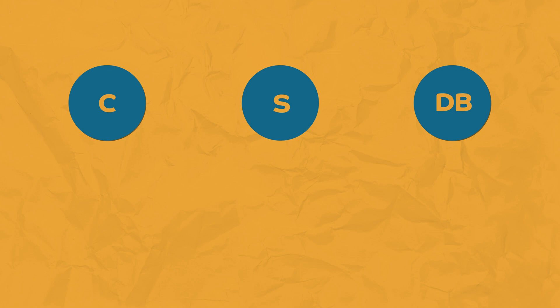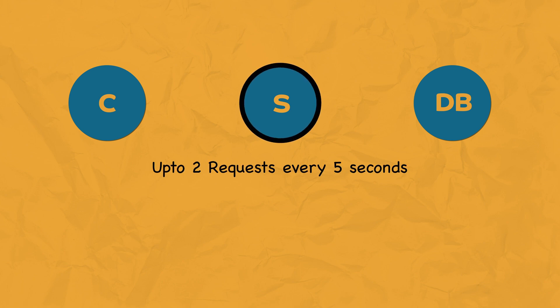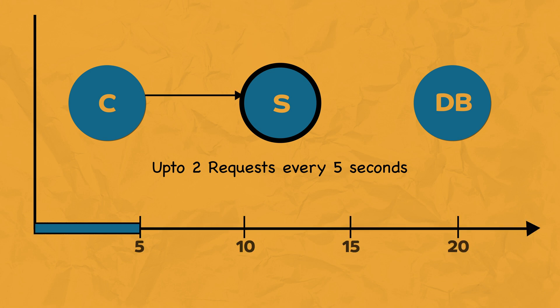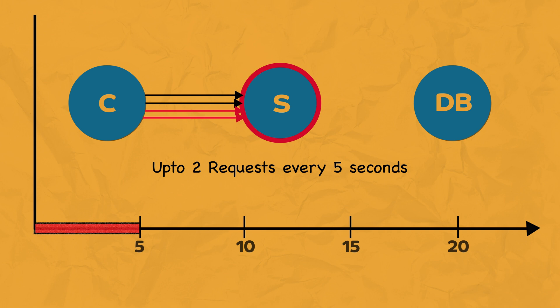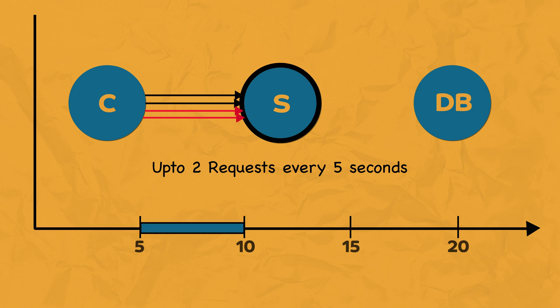For example, when you have a client, a server, and a database, and you want the server to only take two requests in five seconds — the first and second requests will be processed by the server. However, if there is a third request within those five seconds, the server will start returning errors for that third request and any subsequent requests. The server will reset after those five seconds and start accepting requests, but only two requests per five-second window.